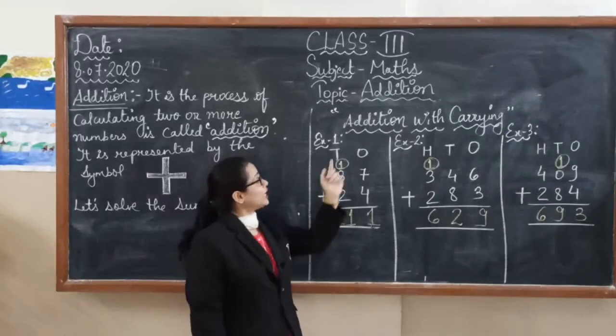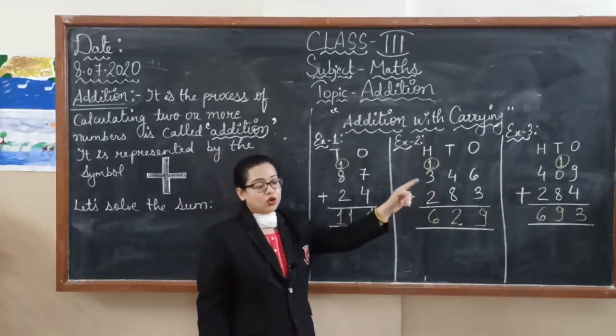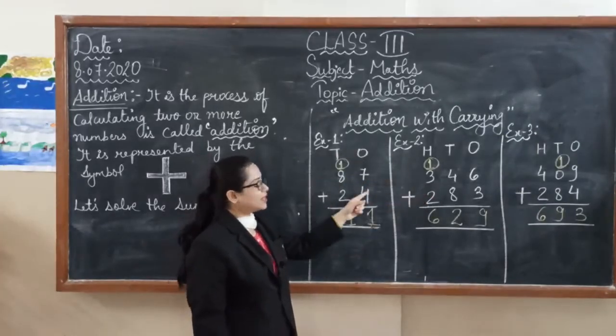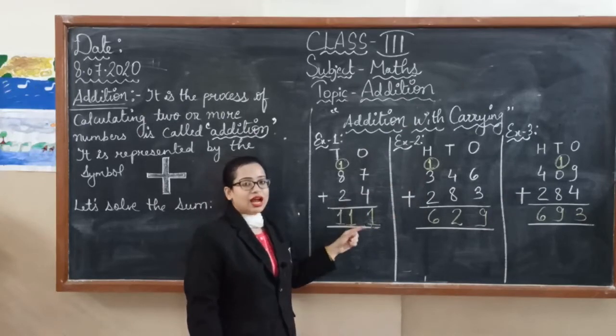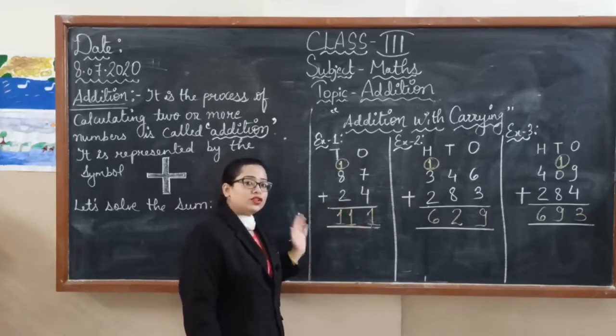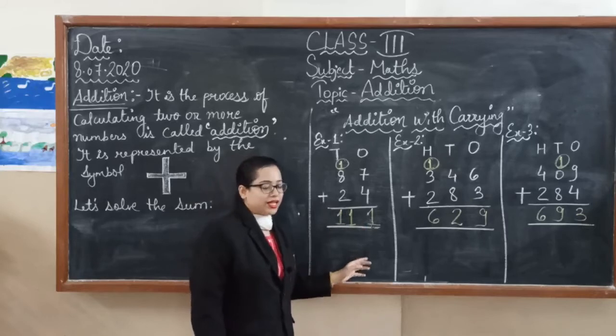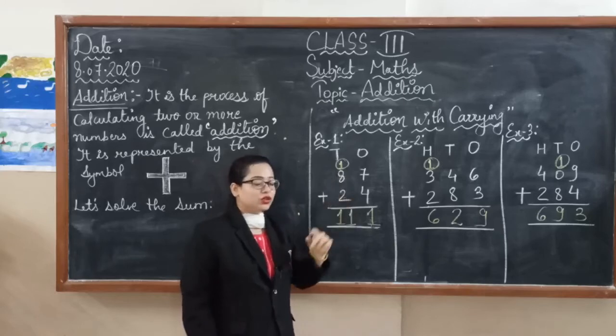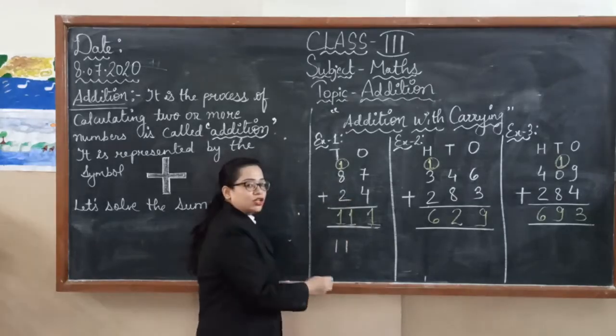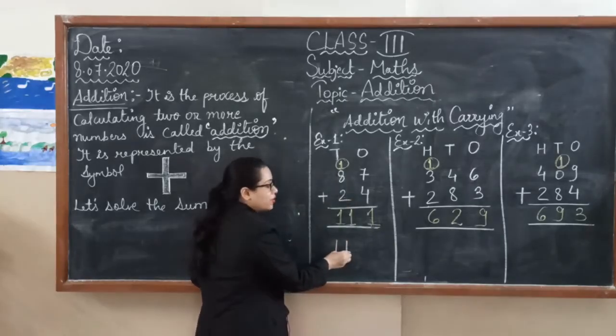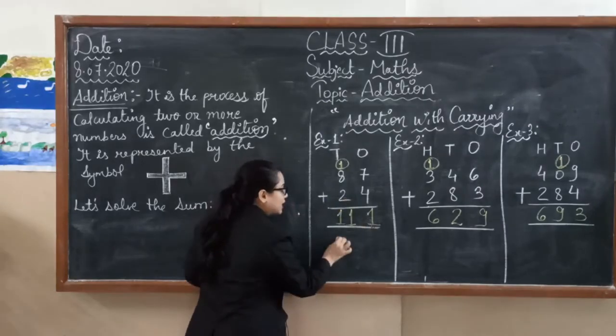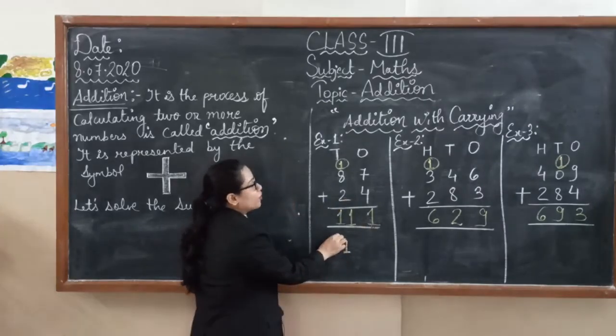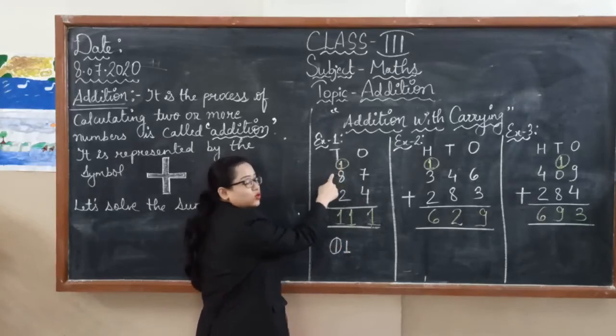Now we will solve addition with carry. First example is eighty-seven and twenty-four. Add these numbers. We will add from the one's place. Seven plus four. Add this number: eight, nine, ten, eleven. So here we are carrying two digits. The last digit one we will write in the one's place. And this one number we will write in the next, on the ten's place.